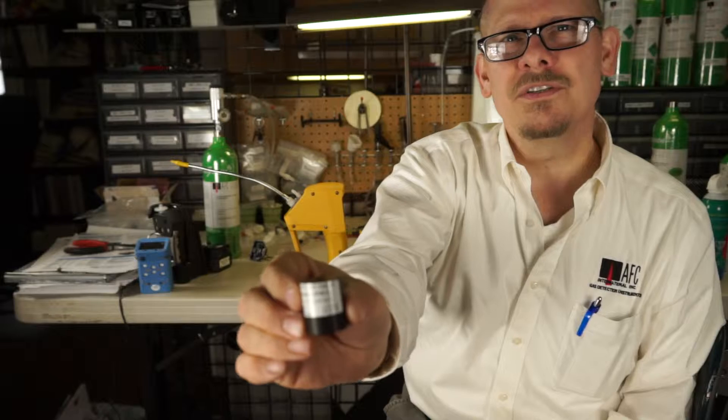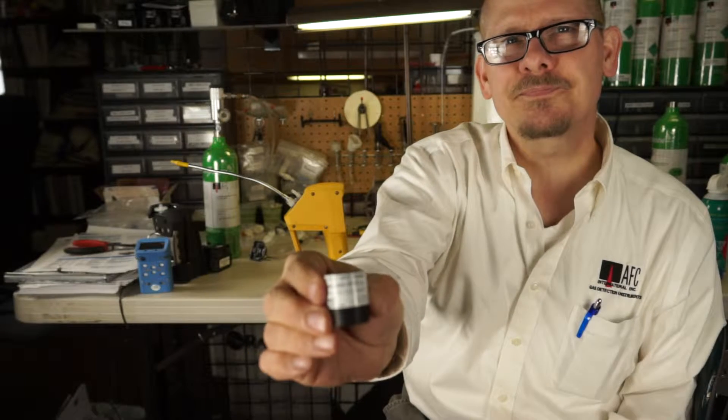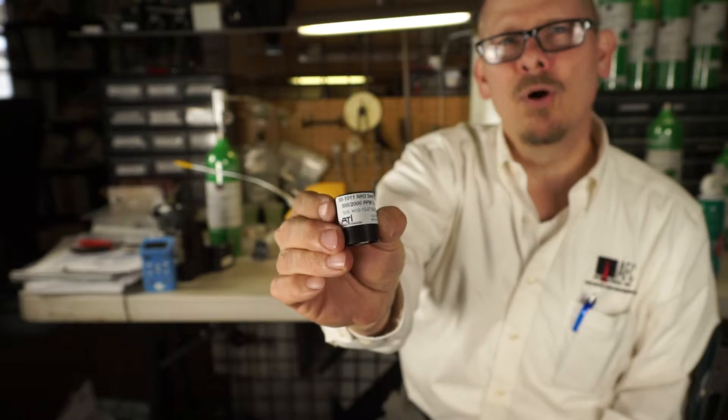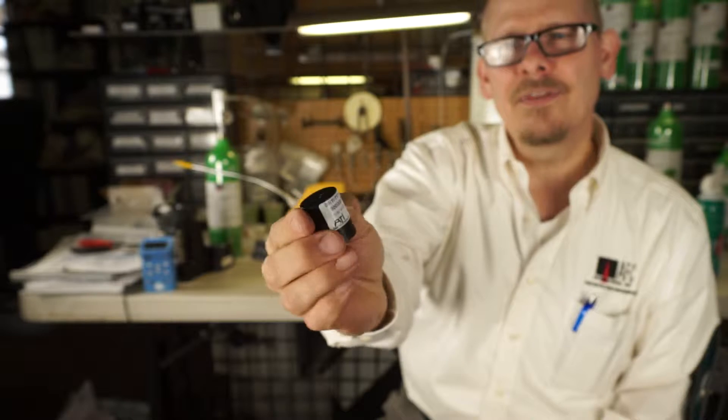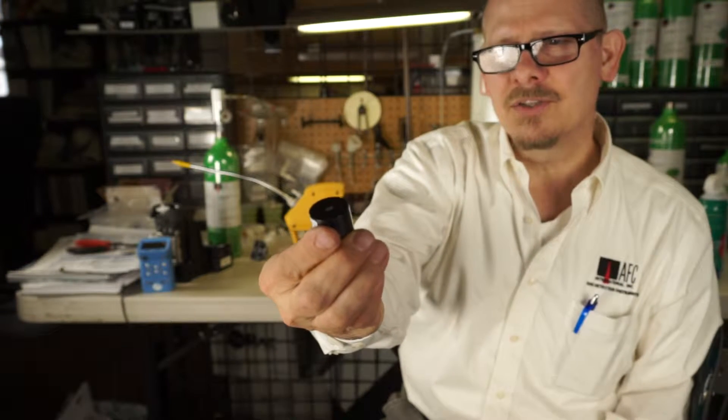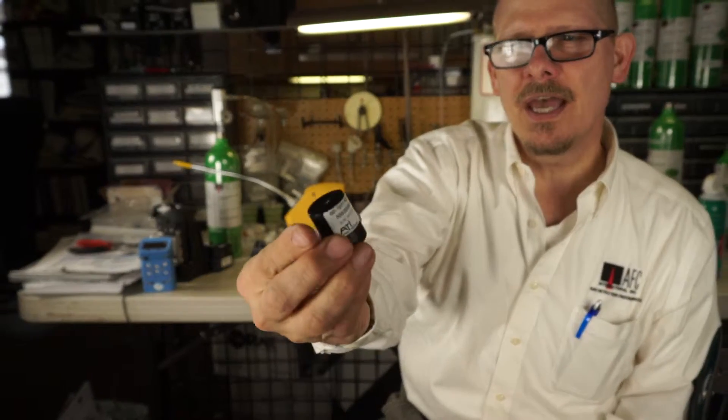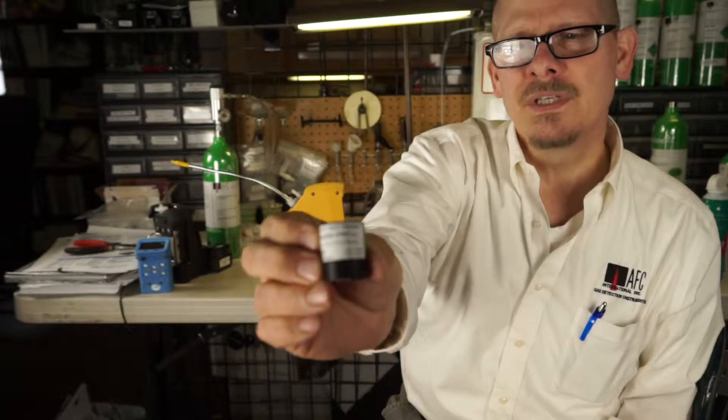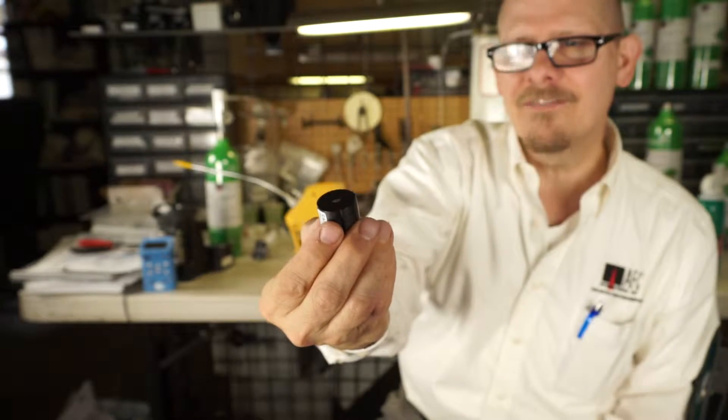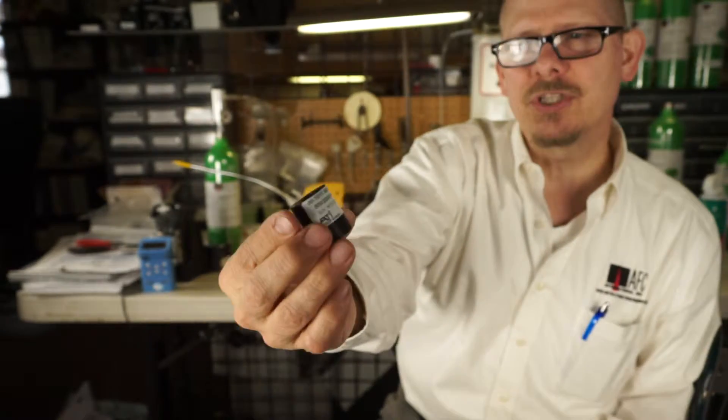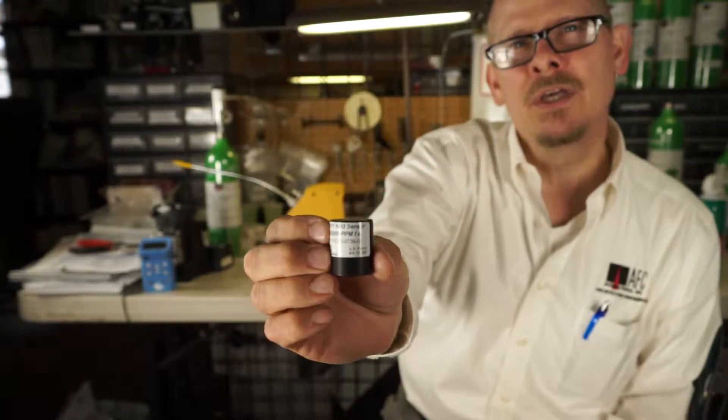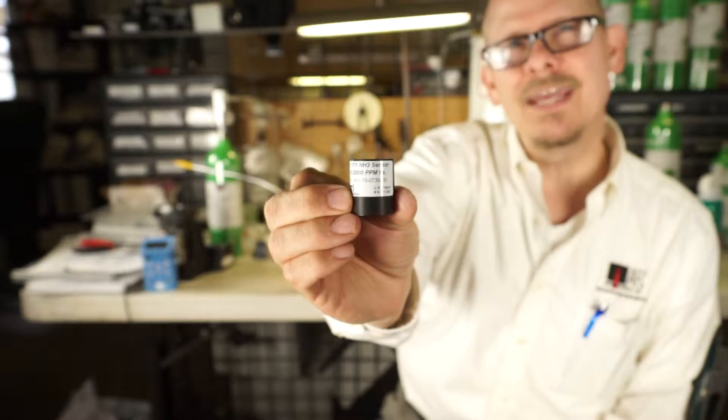This sensor in here is the ammonia sensor. I'm going to pull that out and bring it in so you can see it says ammonia on it. The ammonia sensor on the label says the serial number, the part number 00-1011 ammonia sensor, and then it also has 500/2000 ppm full scale.